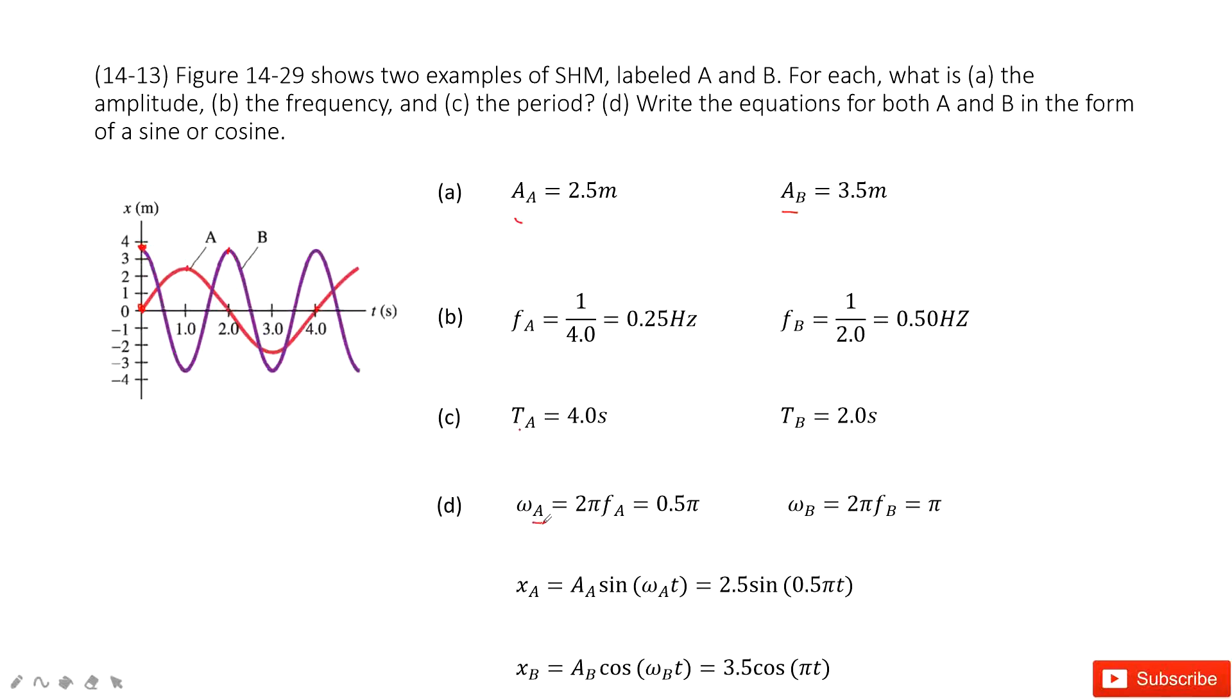Angular velocity for A is 2πfA. So we get it there easy. Now look at the angular velocity for B, 2πfB. Just π.